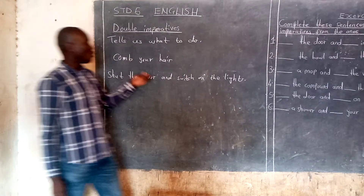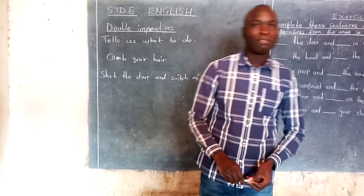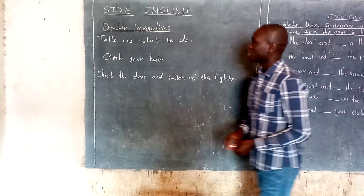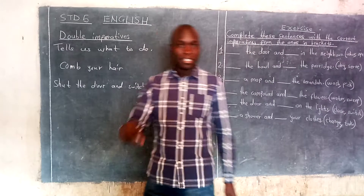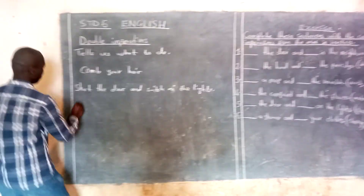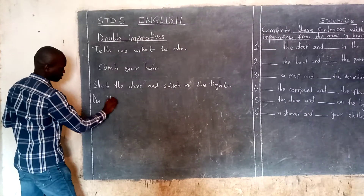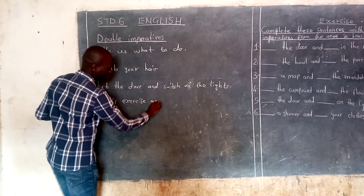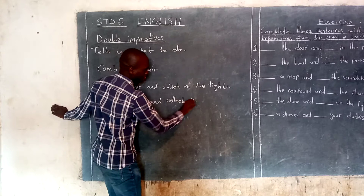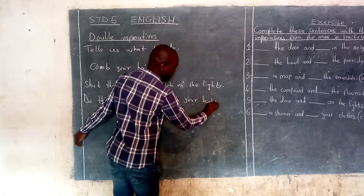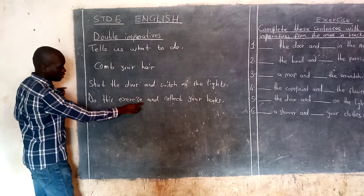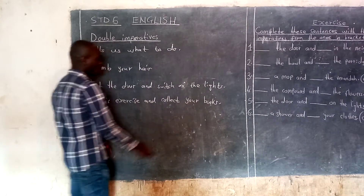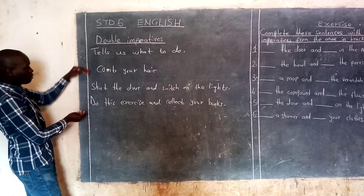That is what we call a double imperative — it gives us two instructions: shut the door and switch on the lights. Can you think of any other examples? For example, you can also say 'Do this exercise and collect your books.' Do this exercise — that is an instruction on its own. Then collect your books — that is also an instruction on its own. So when you put the two together, you come up with what you call a double imperative.